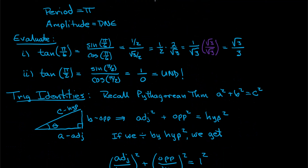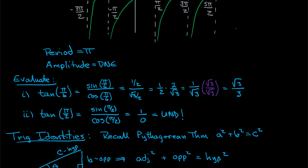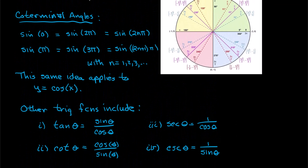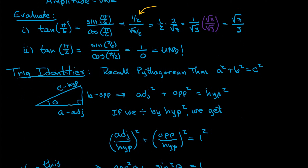Next, we want to evaluate trig functions given different angle measures. For example, find the tangent of π/6. Recall that tangent is sine over cosine, so this gives us sin(π/6) over cos(π/6). Going back to the unit circle, π/6 is the 30-degree angle. The sine is 1/2 and the cosine is √3/2. Substituting in, we get (1/2) divided by (√3/2). When dividing fractions, invert the denominator and multiply — the twos cancel and you get 1/√3.